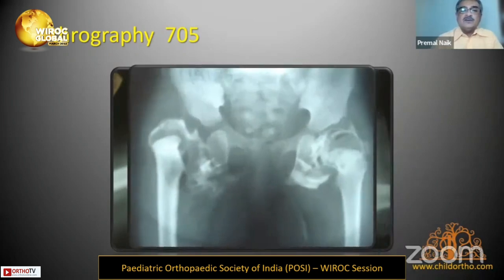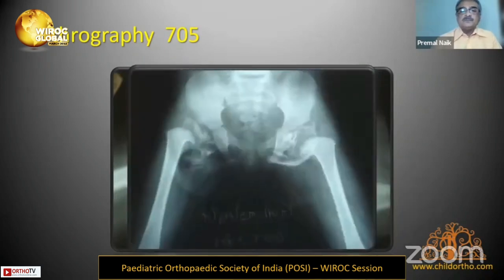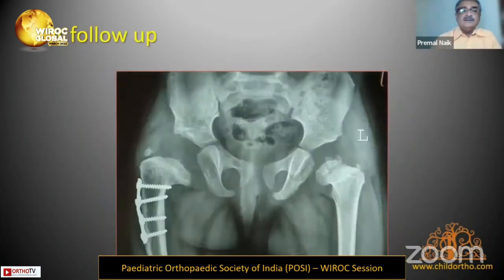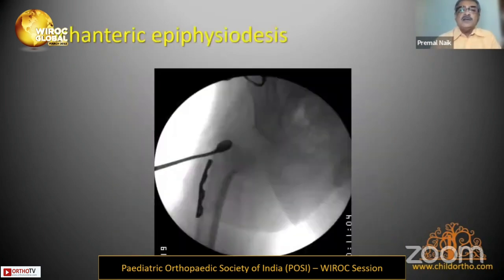The arthrogram shows bilateral capital femoral epiphysis is present. With external rotation there is dislocation on both right and left sides, and a coxa magna. In internal rotation abduction view, the right hip is dislocated and the left has coxa magna. The child was managed with open reduction and femoral shortening. One-year follow-up shows coxa vara with abnormal articular trochanteric distance.